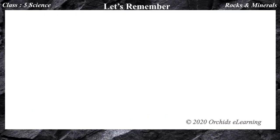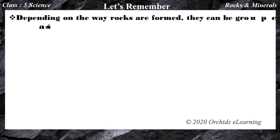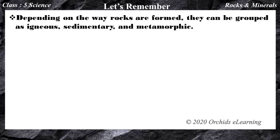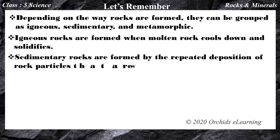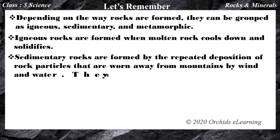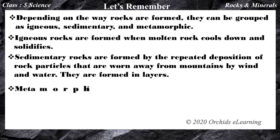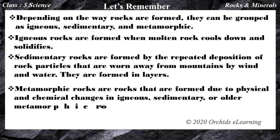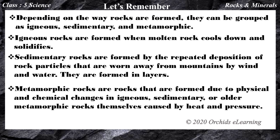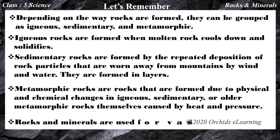Let's remember: Depending on the way rocks are formed, they can be grouped as igneous, sedimentary, and metamorphic. Igneous rocks are formed when molten rock cools down and solidifies. Sedimentary rocks are formed by the repeated deposition of rock particles worn away from mountains by wind and water — they are formed in layers. Metamorphic rocks are formed due to physical and chemical changes in igneous, sedimentary, or older metamorphic rocks caused by heat and pressure. Rocks and minerals are used for various purposes.